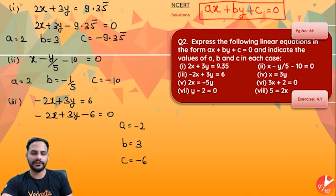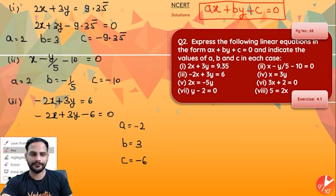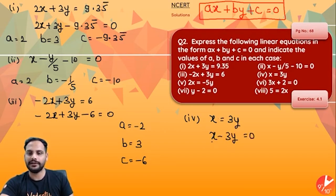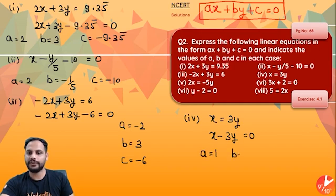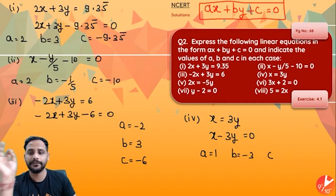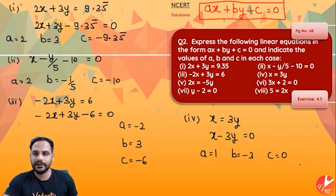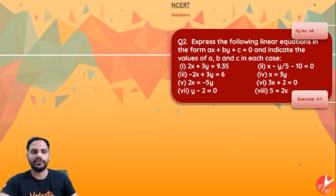The fourth equation is x = 3y. Shift 3y over: x − 3y = 0. This is the general form. The coefficient of x is 1, coefficient of y is −3. The constant term is not present, so whenever any term is missing, make it 0. Therefore c = 0.